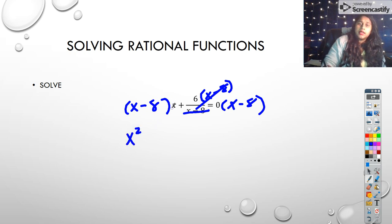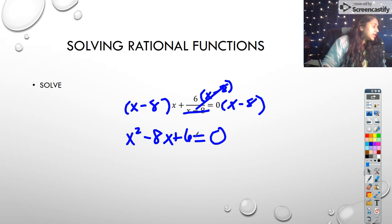x times x is x squared. x times negative 8 is negative 8x, and that's equal to 0 times any of this is simply still going to be 0. But I can't forget this little part right here, which still says plus 6. My x minus 8 might have canceled out, but the rest of that becomes simplistic.